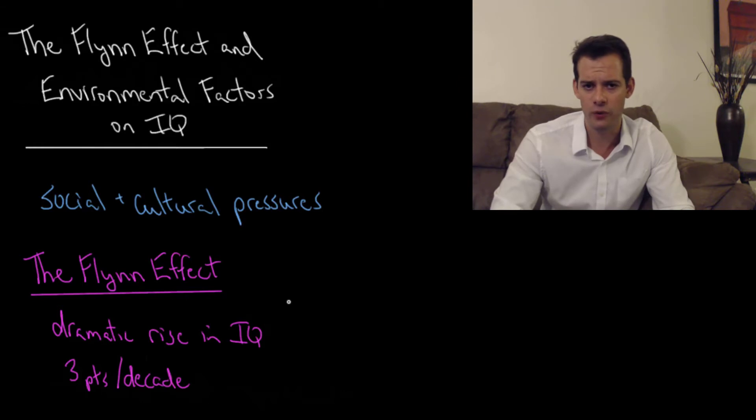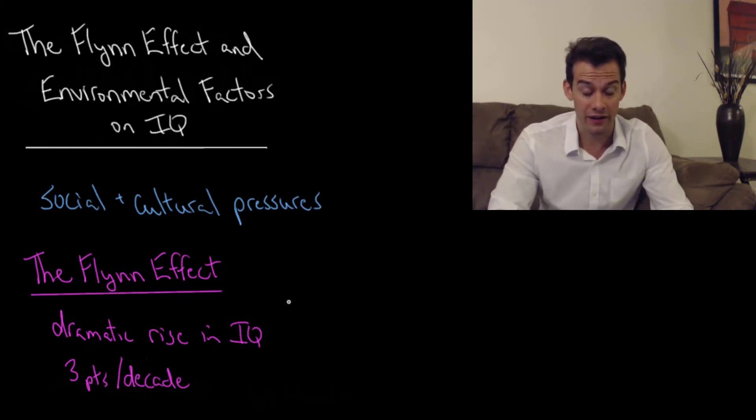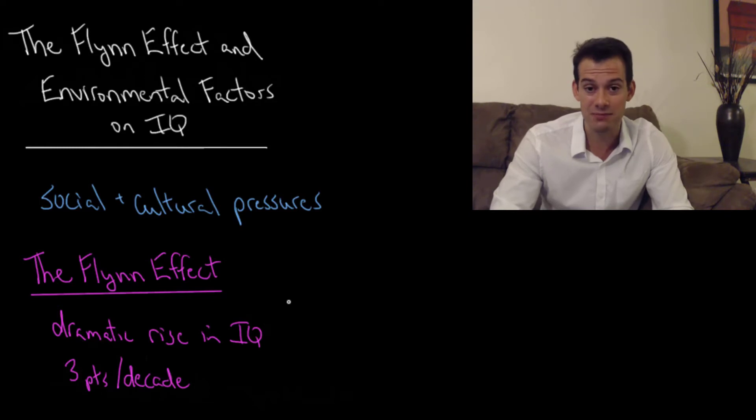Now if we extrapolate from this, we start to wonder, just a few generations ago was everybody a moron? Was the average IQ 70 or below? That doesn't seem to make much sense. If we went back a few hundred years, it would mean that everybody was suffering from intellectual disability. And that's probably not likely to be the case. So what's going on here and how is this happening?